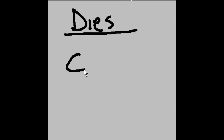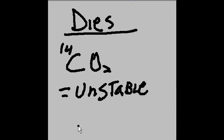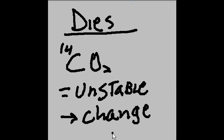What happens is one day the organism dies. The C-14 — the CO2 that was carbon-14 based — that C-14 is unstable. It is no longer being replenished, and it begins to change. It begins to change into nitrogen.